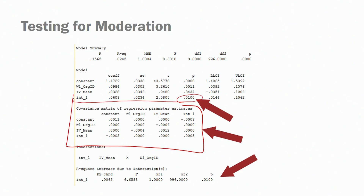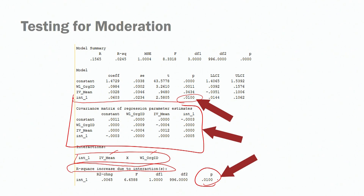To confirm this is the right interaction term, we look here: int one (interaction one) is the multiplication of job meaningfulness and organizational identification. You can also look at the change in R-square when we add the interaction term. The change in R-square — the explained variance — is significant, and that's important. You need to report that when reporting the findings of a moderation model.